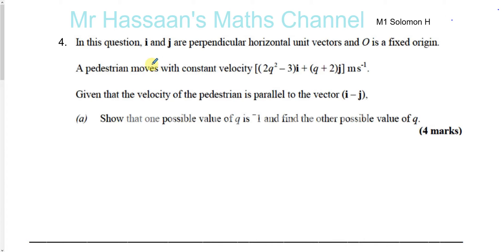It says: in this question, i and j are perpendicular horizontal unit vectors and O is a fixed origin. A pedestrian moves with a constant velocity (2q² - 3)i + (q + 2)j meters per second. Given that the velocity of the pedestrian is parallel to the vector i - j, show that one possible value of q is -1, and find the other possible value of q.